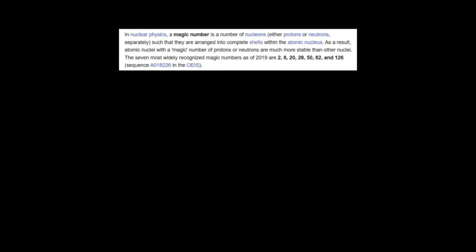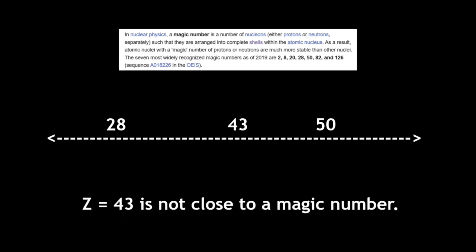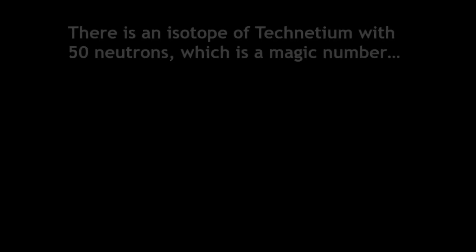Also, there's a concept in nuclear physics known as magic numbers. If an element has a number of protons or neutrons that is close to a magic number, it is typically more stable than other isotopes of such elements. However, technetium has 43 protons, which is not close to the neighboring magic numbers of 28 and 50.